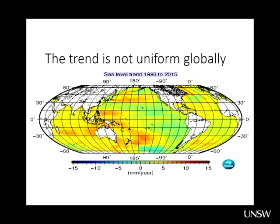Sea level rise is not uniform. The satellite record from 1993 to 2015 shows a global average of about 3 millimetres per year, but in the western Pacific some regions are seeing about three times that — 10 millimetres per year — having significant impact. There is close to zero sea level rise in the eastern Pacific, primarily a result of natural variability, though there are some indications in the record consistent with the pattern we get from climate change simulations.